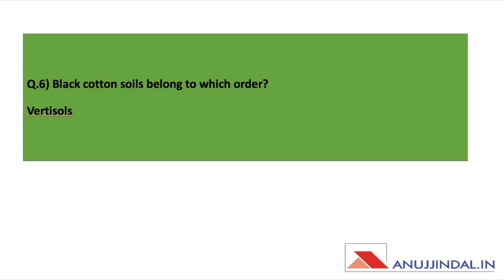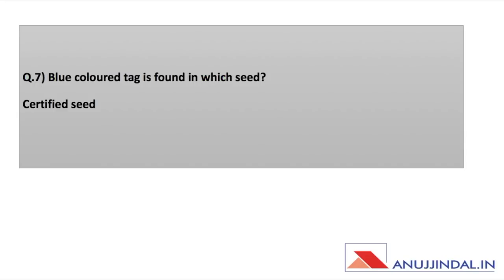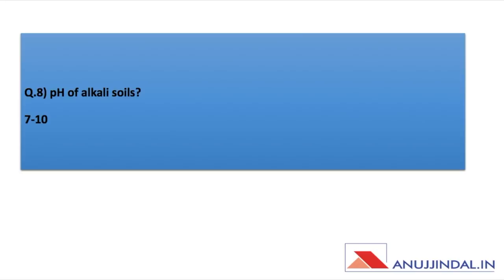Next: black cotton soils belong to which order? The US soil classification has 11 soil orders, and black soil belongs to Vertisols. Next, the blue color tag is found in which seed? Certified seed is the answer, and I hope you marked the correct answer.